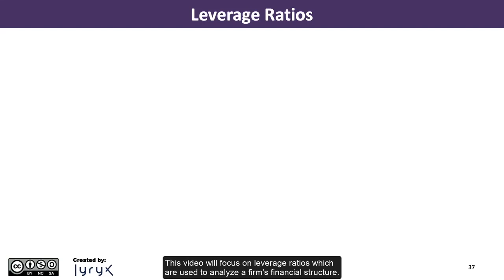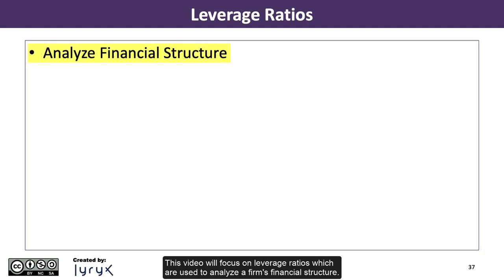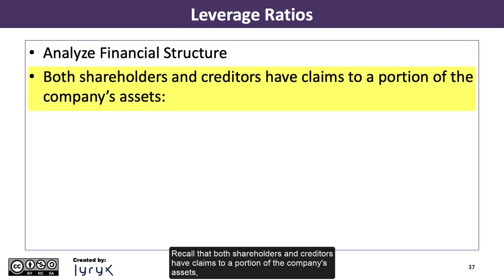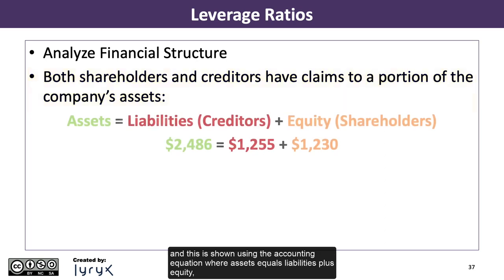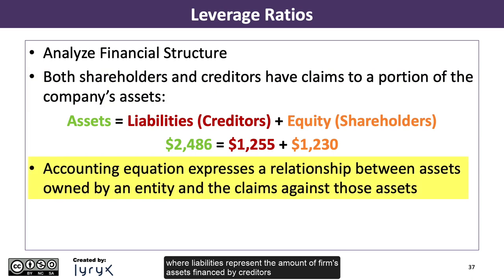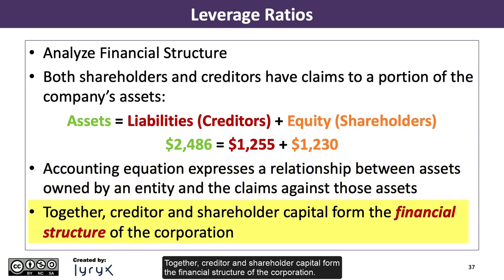This video will focus on leverage ratios, which are used to analyze a firm's financial structure. Recall that both shareholders and creditors have claims to a portion of the company's assets, shown using the accounting equation where assets equals liabilities plus equity — liabilities represent the amount financed by creditors, and equity represents the amount financed by shareholders. Together, creditor and shareholder capital form the financial structure of the corporation.